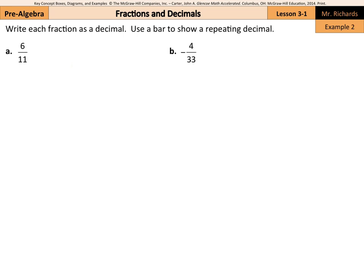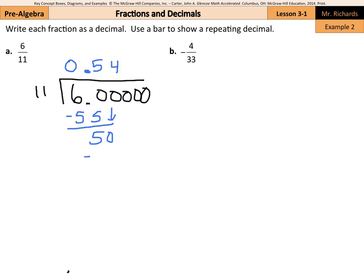Now, in our second example of writing each fraction as a decimal and use a bar to show a repeating decimal, we're going to have something that's repeating here. So, if we show it with long division, with our 6 divided by 11, put a decimal point and a handful of zeros here. 11 doesn't go into 6, but it goes into 60 about 5 times. Subtract 55, you end up with 5. Bring down your 0. 11 goes into 50 about 4 times. 4 times 11 is 44. And then we have that 6.